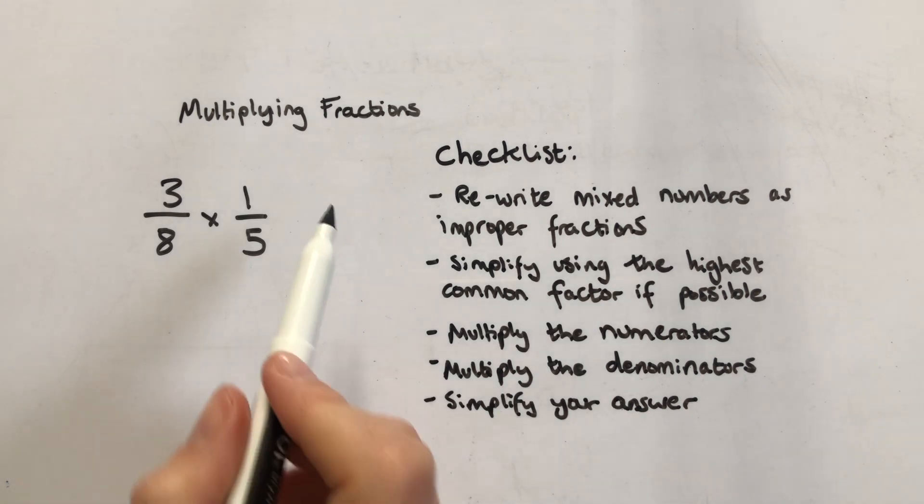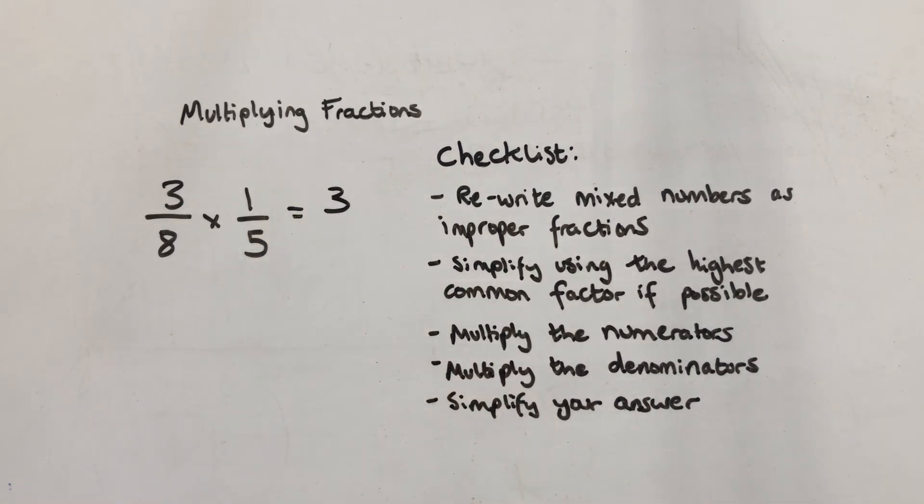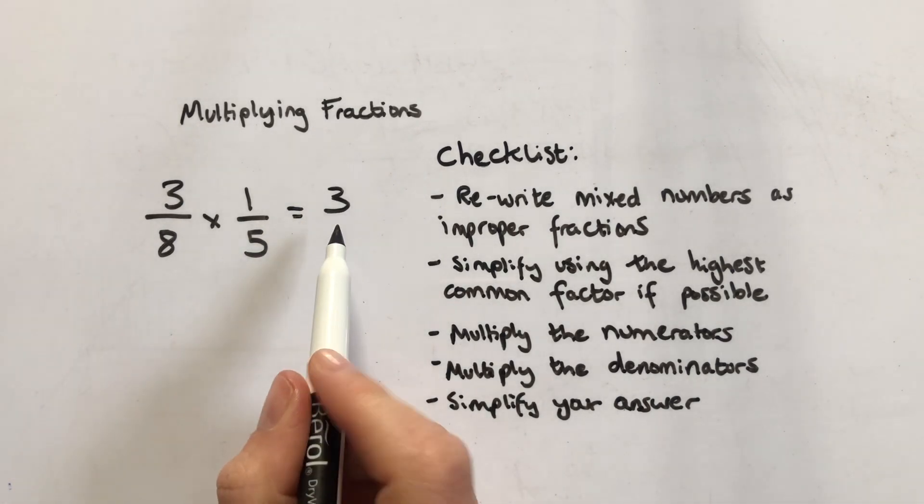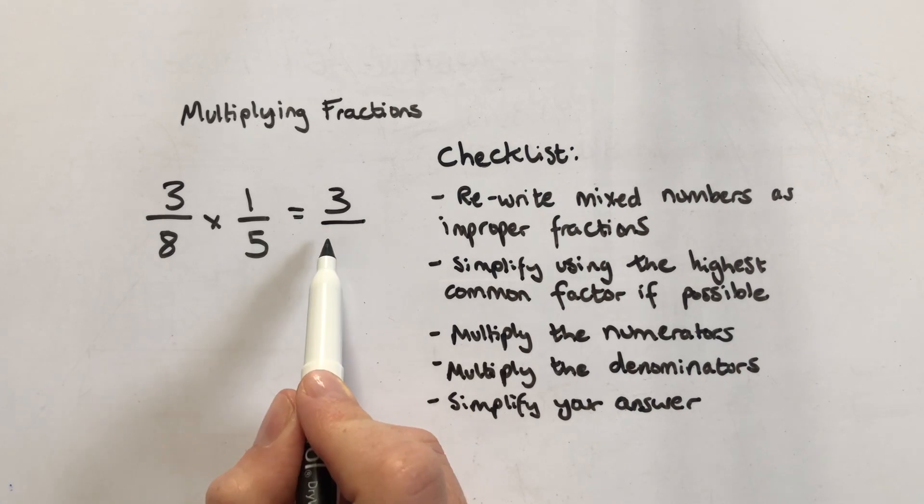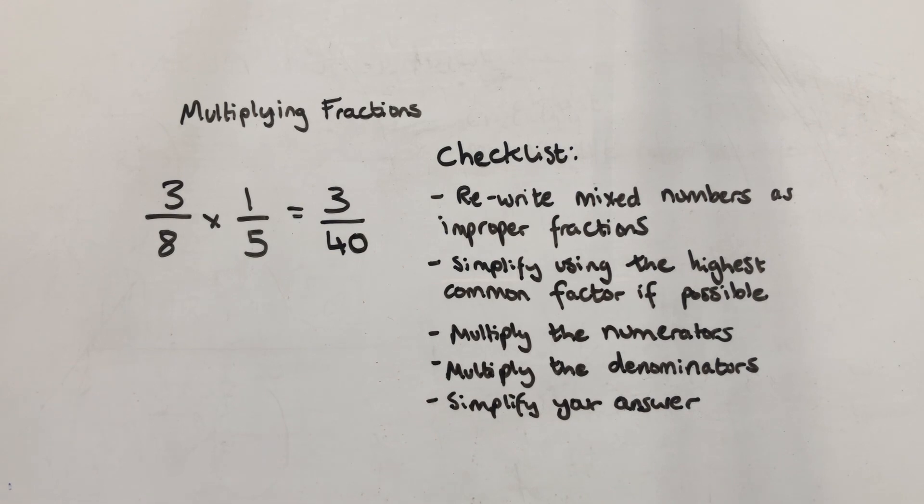Next it says multiply the numerators, so three times one equals three. Then multiply the denominators, eight times five equals forty, and then simplify your answer if possible. That is the simplest form of that fraction so the answer is three over forty or three fortieths.